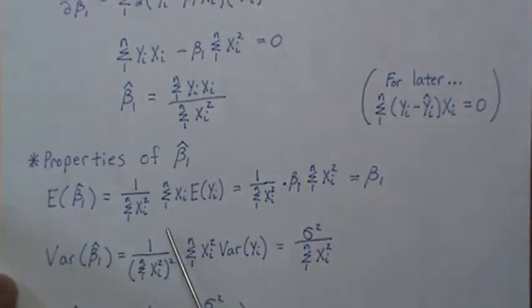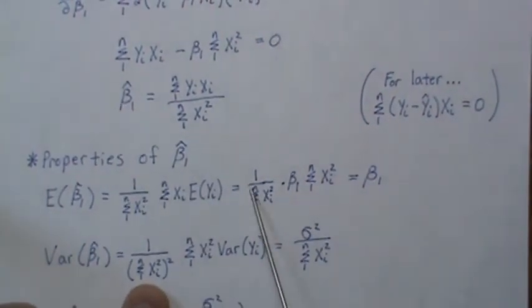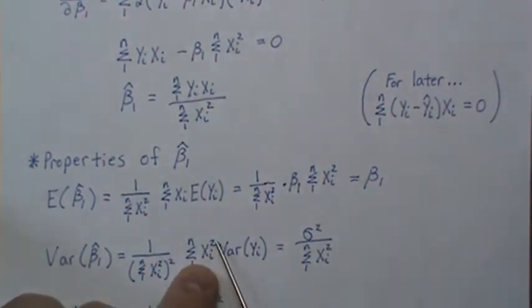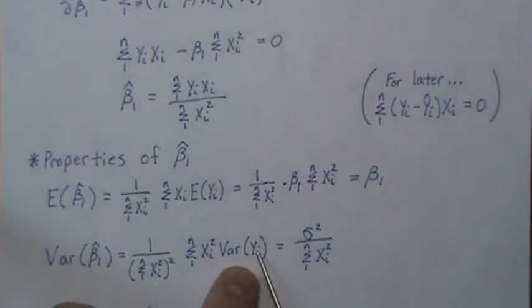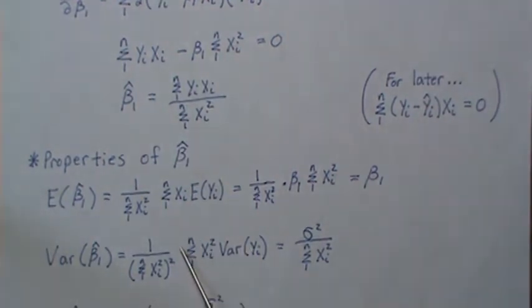The variance of beta one hat, so this constant comes out squared. And then when we go into here, we've got to take the xi squared times variance. And these are iid, so there's no covariance. And the variance of this is sigma squared, so it comes out front. And then the sum of the xi cancels with one of those, and we're left with this.